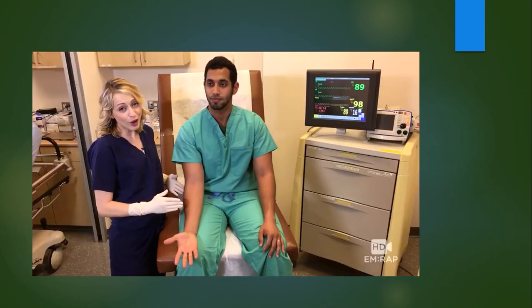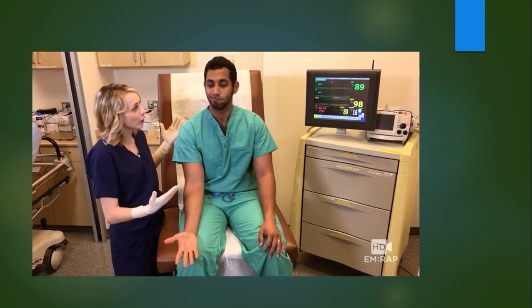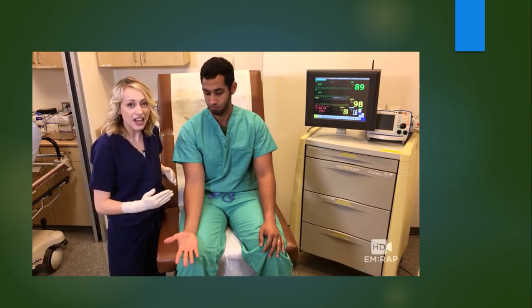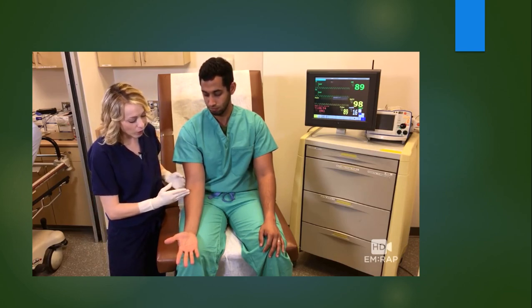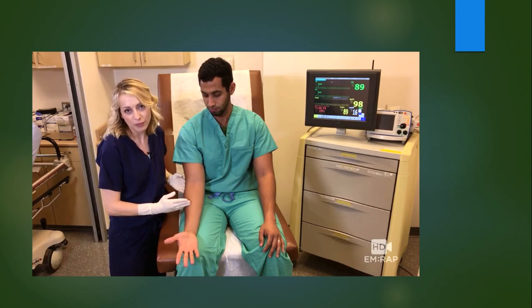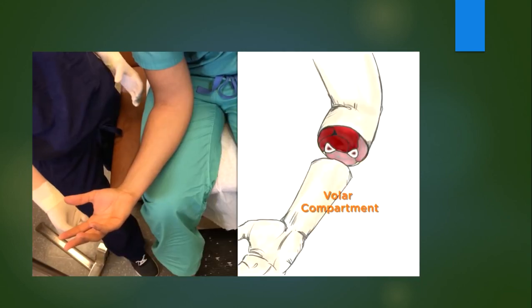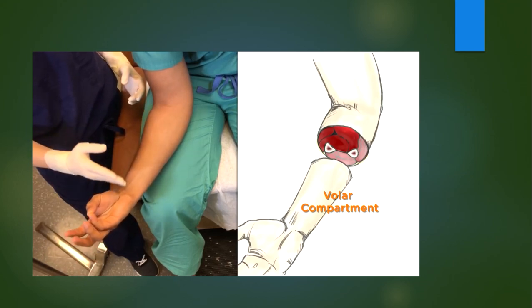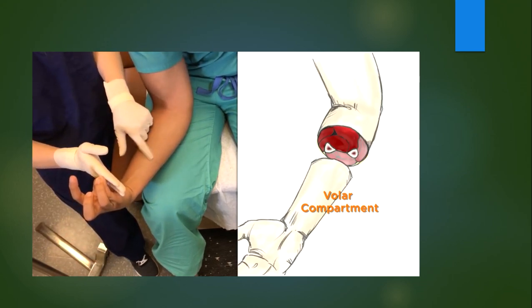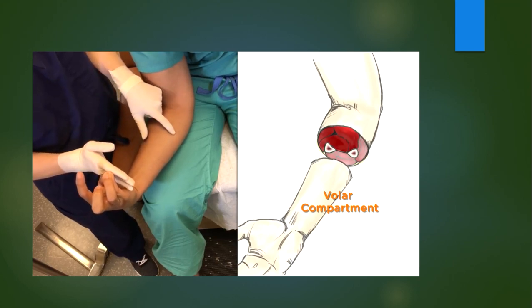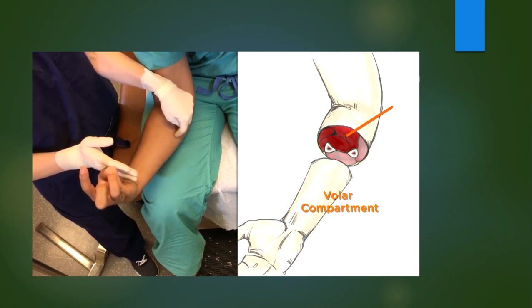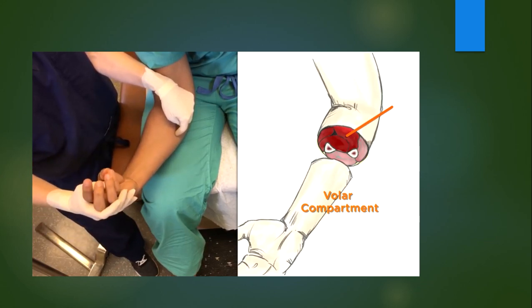The forearm has two main compartments. Okay, arguably maybe more, but two that we're going to focus on, the common ones. And again, for both of these, you're going about one-third the way down the forearm. For the volar compartment, position the patient like they're doing an arm curl. Then have them oppose their thumb and small finger and flex against resistance. Track that palmaris longus tendon up and insert the needle just medial to this point aiming towards the ulna. Go one to two centimeters deep and the pressure rises with extension of the wrist.